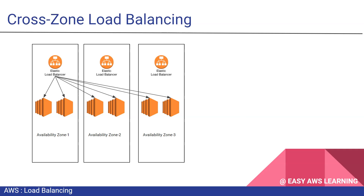The same way, the second load balancer will also distribute traffic to all registered instances, and the same happens with the third one. So basically, this will distribute traffic to all registered EC2 instances once you enable cross-zone load balancing. This is the best way to evenly spread the load across instances using the cross-zone load balancing functionality.